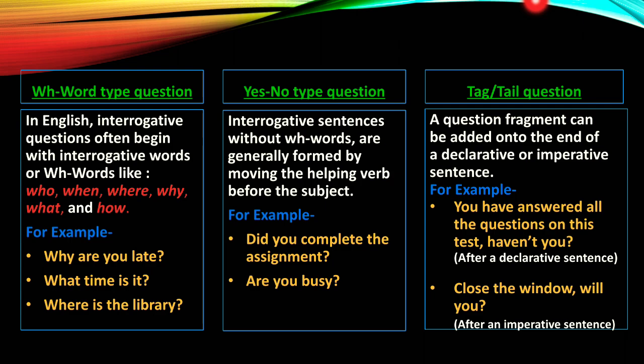Yes/no type questions: Interrogative sentences without WH words are generally formed by moving the helping verb before the subject. In this type of question, it is enough to answer yes or no. For example, 'Did you complete the assignment?' — the answer could be yes or no. 'Are you busy?' — same thing, the answer could be yes or no. So, as we can answer this type of question by stating only yes or no, this is known as a yes/no type question.